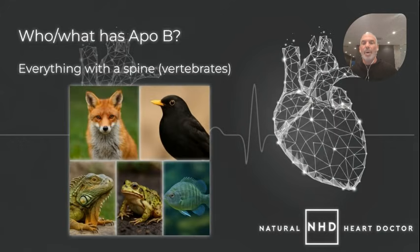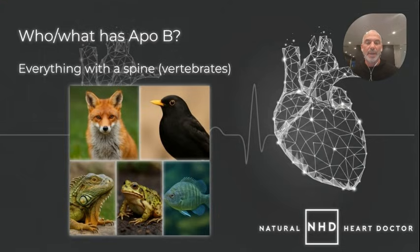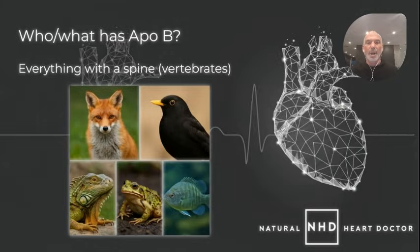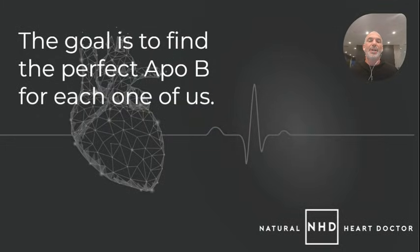Everything with a spine — all vertebrates — have LDLs. They all have ApoB in these LDL particles. So it's really important throughout all these different species. So whenever ApoB or LDL is called bad, we have to remember that all of these animals — everything with a spine — has LDL. So why would it be bad? LDL is not bad and ApoB is not bad, but we want to find the perfect level for each one of us.